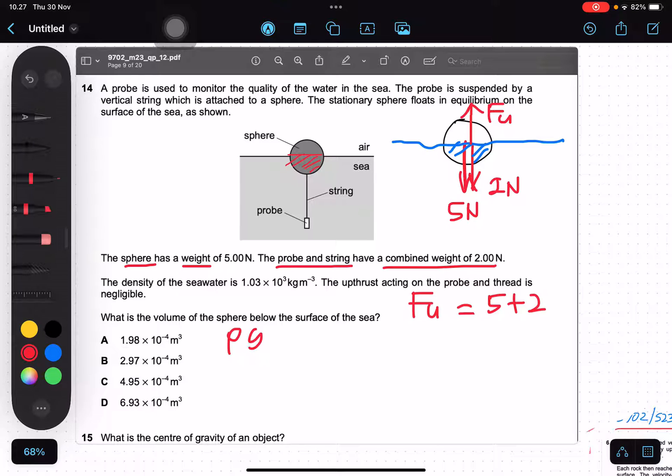F upthrust is rho G volume, volume below the surface, equals to 7. We need to find the volume below the surface.